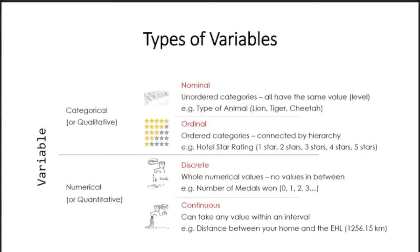We introduced variables at the beginning of semester during the first lecture. You have to remember this because there are going to be roughly half theory and half calculations on the exam — quite a lot of theoretical questions, so be careful with variables. You have two kinds of variables: categorical variables, also called qualitative variables. They are not numbers as such — they can only be counts of answers, not numbers, because numbers are always numerical or quantitative variables.